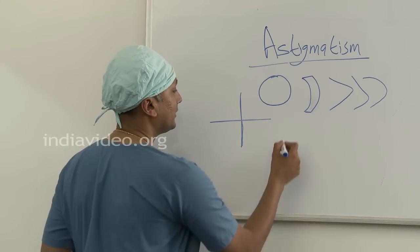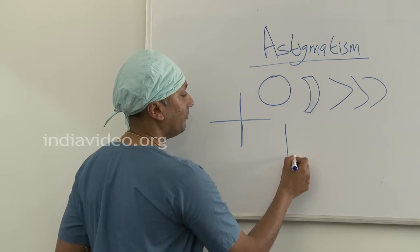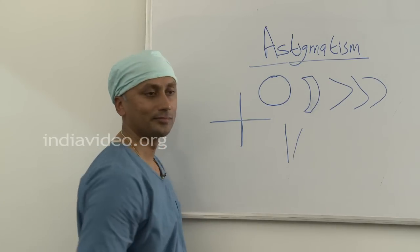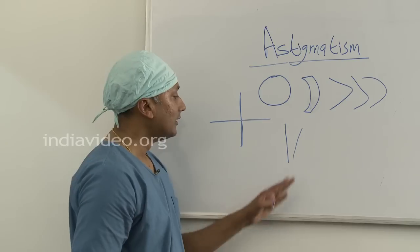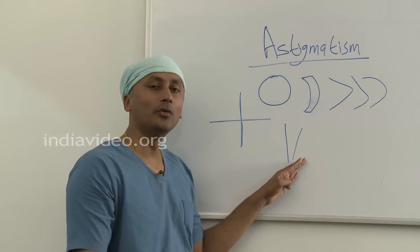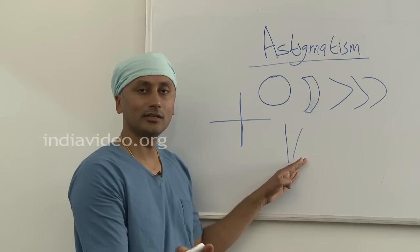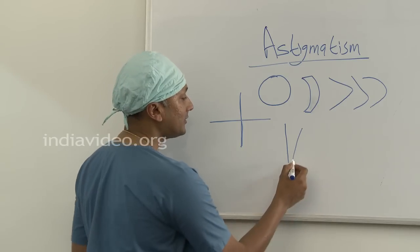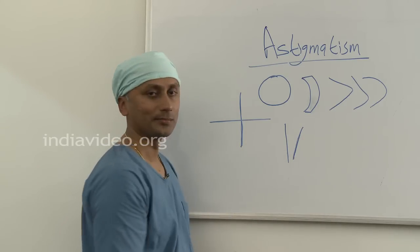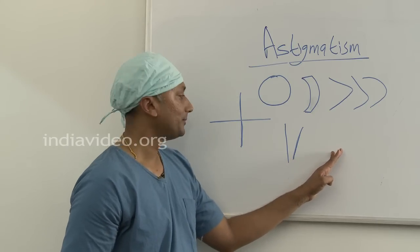Such a person will see a straight line with a slight curvature. If you take the example of a stick that is dipped in water, you can see the end of the stick slightly deviated. The same effect is seen in astigmatism, and this signal is transferred to the brain.